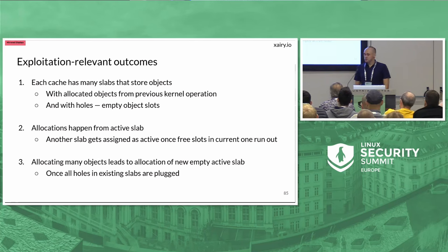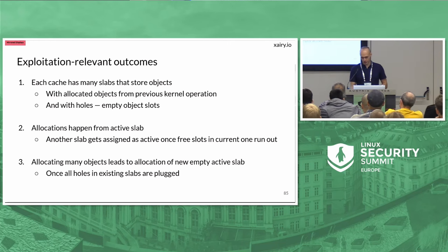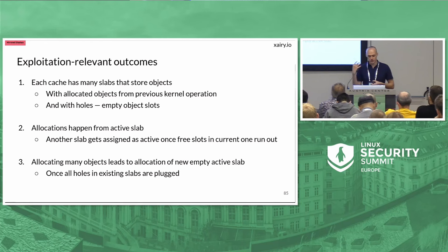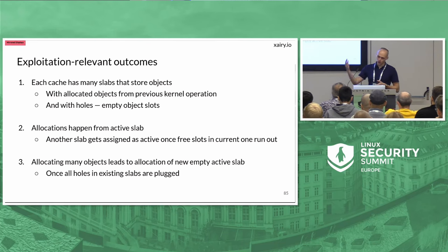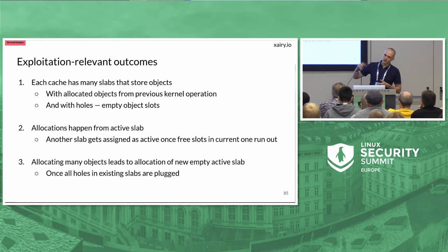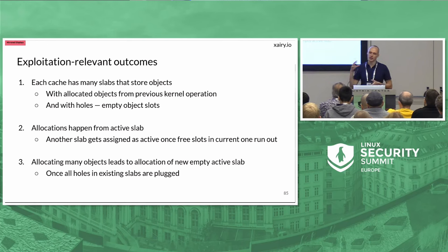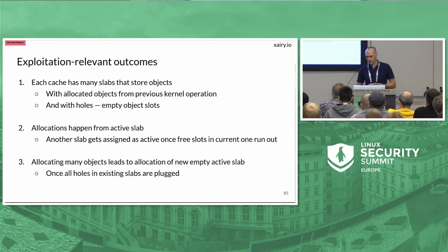Let me explain the core takeaways we need before discussing the first exploitation primitive. First, we have many caches, each with many slabs storing object slots — some free, some allocated. Second, we have the separation between slab types, and allocations happen from the active slab first; once the active slab's slots run out, the SLUB allocator assigns a different slab as active. Third, if we keep allocating many objects, at some point a new slab will be created with all slots empty and assigned as the active slab.